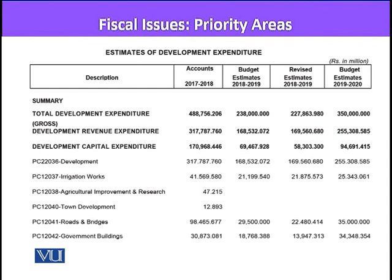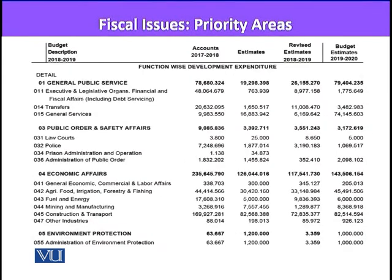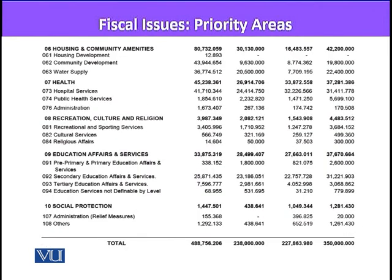Looking at the development expenditure, most of it is spent on irrigation, works, roads and bridges, and other infrastructure areas. Looking at areas related to social welfare or social policy, there is 37 billion on education, 37.6 billion similarly, and 42 billion on housing. So out of 350 billion in development expenditure, almost 100 billion is spent on social policy.